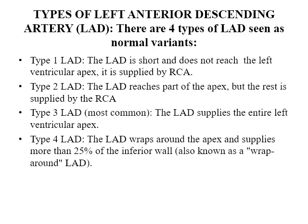Type 3 is the most common type and it supplies the entire left ventricular apex. In type 4, also known as the wraparound, the LAD wraps around the apex and supplies more than 25% of the inferior wall.